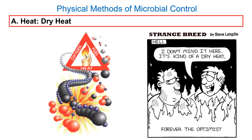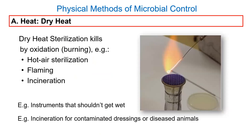What about dry heat for things that can't get wet? There are different types. One type is direct flame — you can sterilize an instrument in a Bunsen burner by oxidizing it, destroying whatever is on it. This is used in some cases; for extremely infectious materials, there are incinerators. Really high-security labs dealing with Ebola and similar pathogens will incinerate a lot of materials.